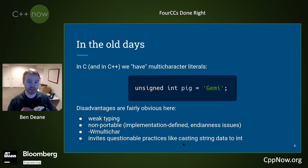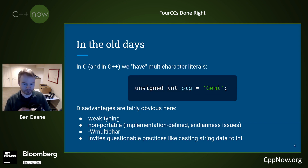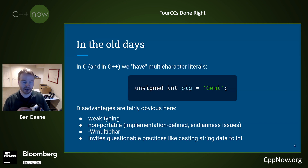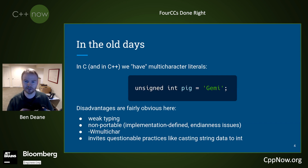Now, in the old days, and indeed today, we actually have multi-character literals in C++ and in C. And so you can write this, and given the right flags, it will compile. But the disadvantages are fairly obvious. It's not portable — in fact, the C standard says that it's implementation defined. There are some obvious endianness issues, because usually you want to write these things to or read them from a file. And it just invites questionable practices like casting string data to ints — stuff that's fine in C, but not in C++.